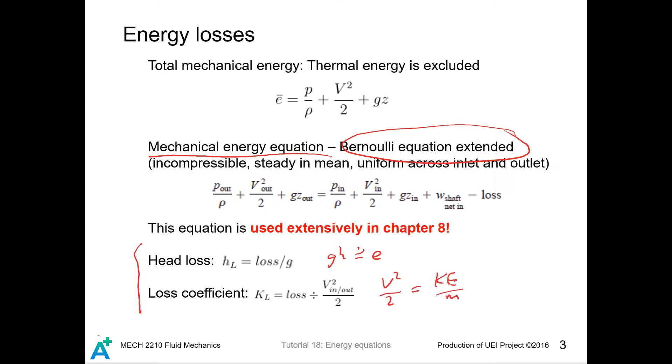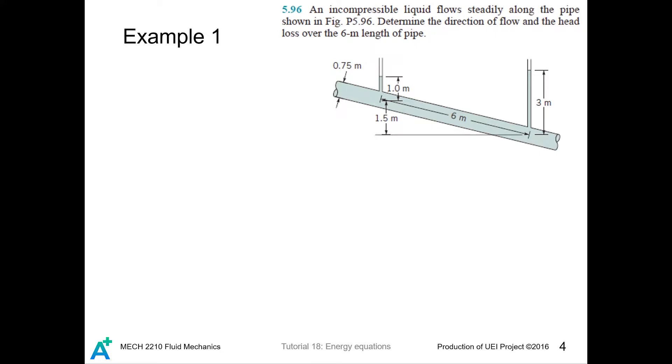People speak of head loss that has dimension of length. Also v squared divided by 2 is the kinetic energy per unit mass, so people compare the energy loss with the kinetic energy with a dimensionless number called the loss coefficient. You'll learn more about that in chapter 8. As I already mentioned in the first tutorial, we can determine the flow direction considering the energy.